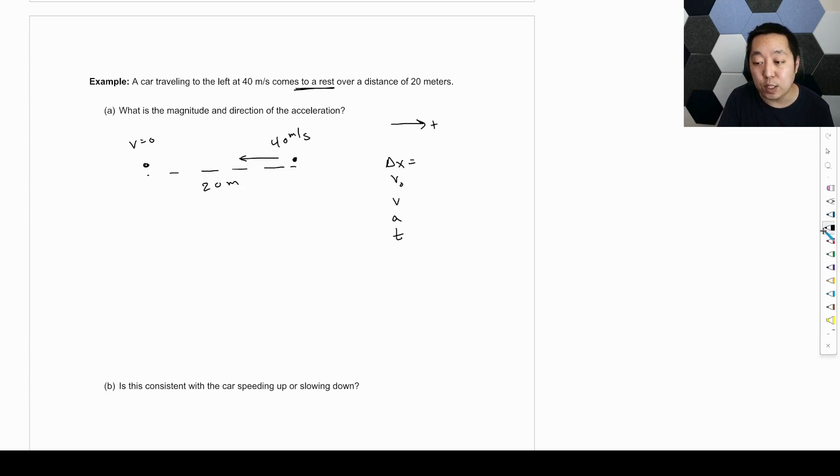Then we're going to list out the kinematic variables. Now the displacement vector is from the start to the end. So it's pointing to the left and its length is 20. It's a distance pointing to the left, so it's negative 20 meters. Notice that because I said right was positive and the arrow is pointing to the left. The initial velocity is also pointing to the left, so it's negative 40. The final velocity, the velocity at the end is going to be zero because of that rest. And we want to know the acceleration. We're not given the time.